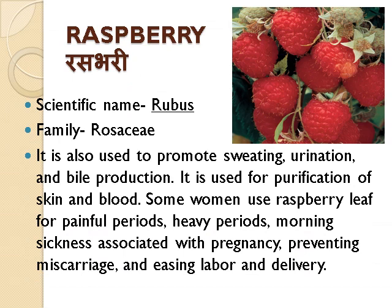Raspberry, scientific name Rubus, family Rosaceae. It is used to promote sweating, urination and bile production. It is used for purification of skin and blood. Some women use raspberry leaf for painful periods, heavy periods, morning sickness associated with pregnancy, preventing miscarriage and easing labour and delivery.